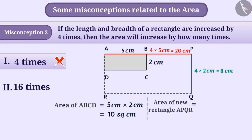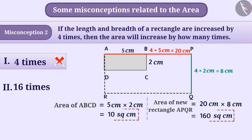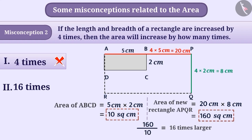Now the area of the new rectangle will be 20 cm × 8 cm = 160 square centimeters. Comparing the areas in both cases, the new area is 160 ÷ 10 = 16 times larger than the first area. For such questions, option 2 is the correct answer.